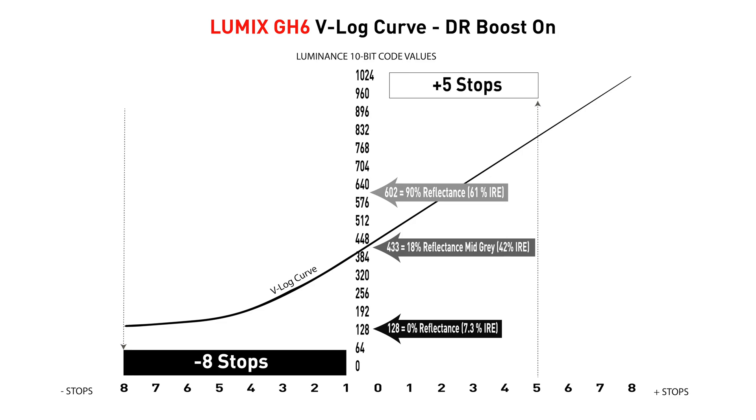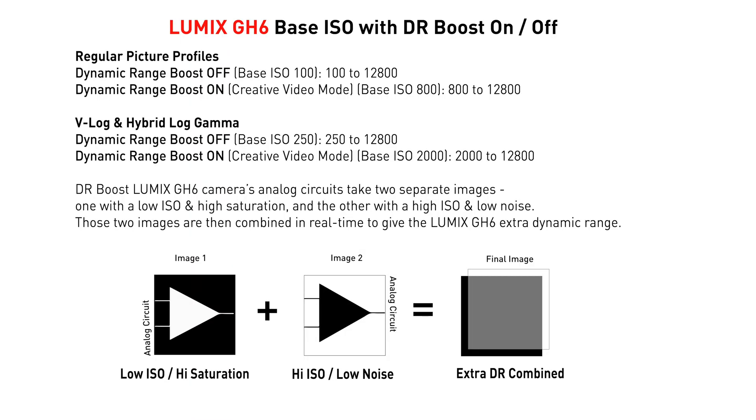eight stops under and five stops over, offering an incredible usable seven stops of exposure latitude — three stops over to four stops under to play with. Exposure latitude is the range in which a light-sensitive subject can be overexposed or underexposed while still achieving great-looking results.